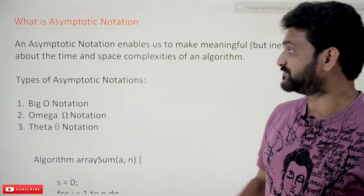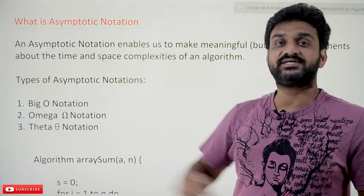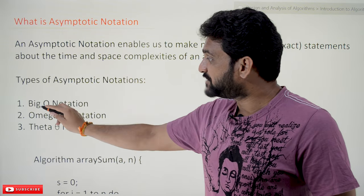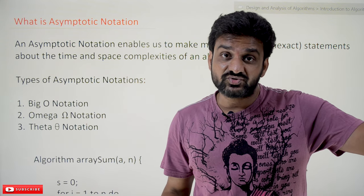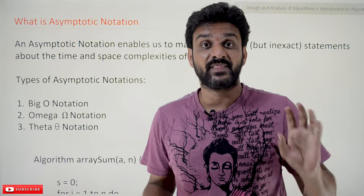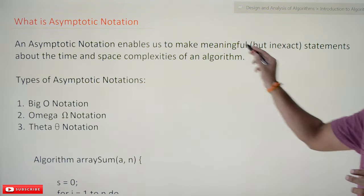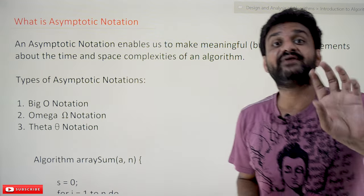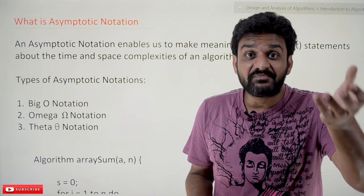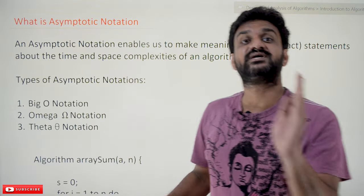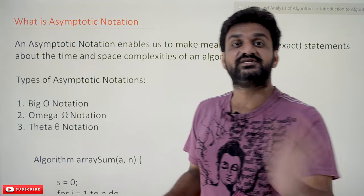We will understand that by using an example. There are different types of asymptotic notations — a time complexity can be notated using any of these: Big-O notation, Omega notation, and Theta notation. These are the three different types of notations that can be given to the time or space complexity of an algorithm. Each notation describes a certain kind of behavior of the algorithm.